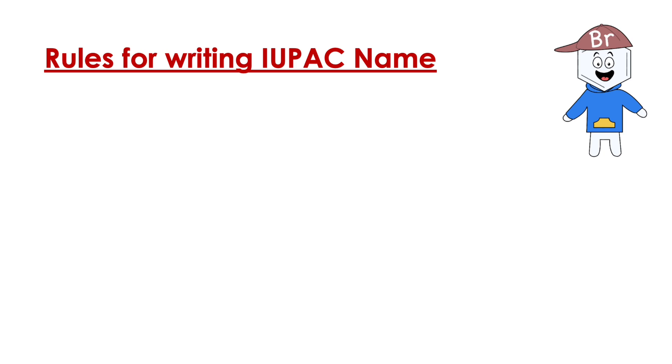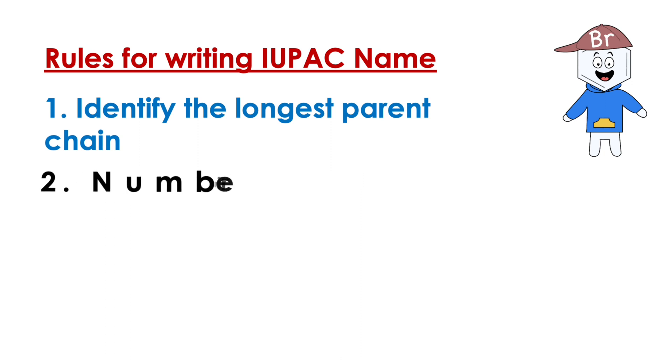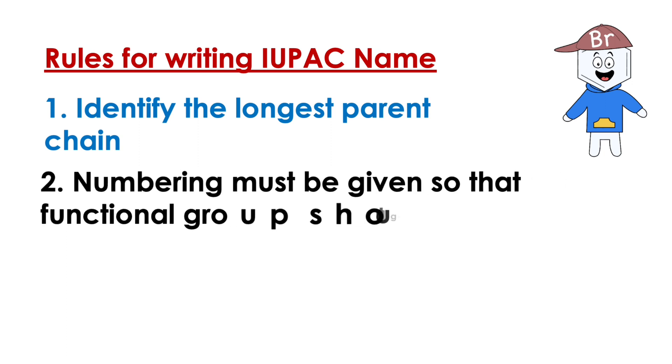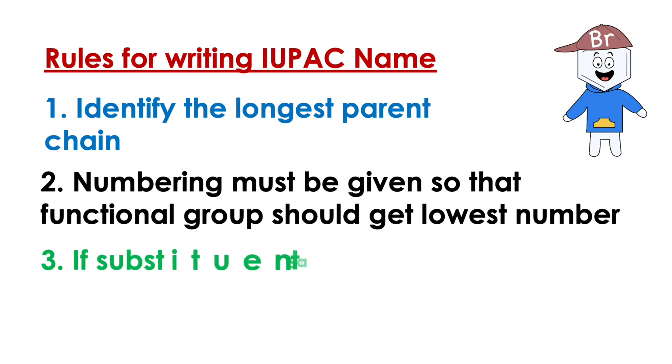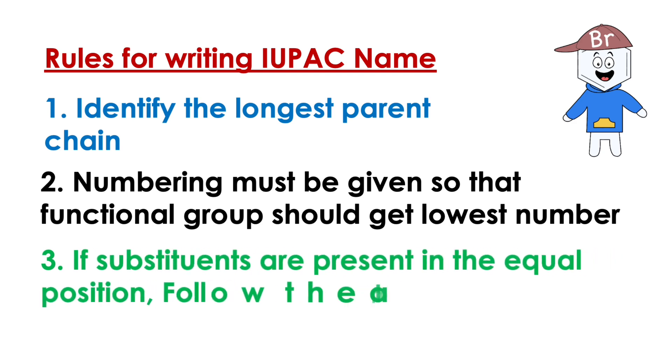According to the rules, identify the longest parent chain. Numbering must be done so that functional group should get the lowest number. If substituents are present, numbering must be given based on their alphabetical order.